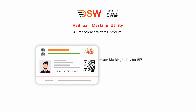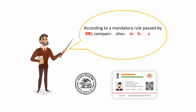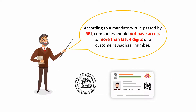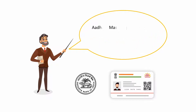Aadhaar Masking Utility for BFSI is a Data Science Wizards product, which is in accordance with RBI guidelines. According to a mandatory rule passed by RBI, companies should not have access to more than the last four digits of a customer's Aadhaar number.